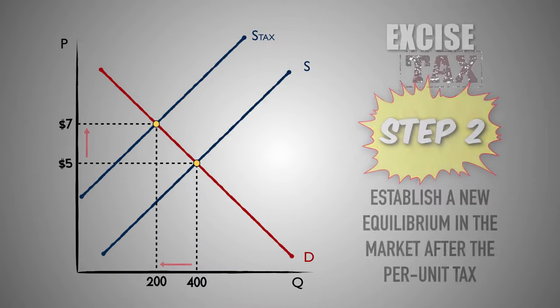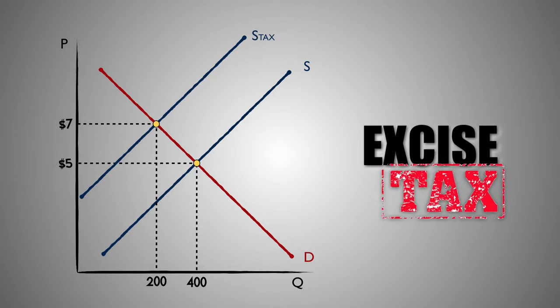Ultimately, did this per unit tax accomplish its goal? It sure did. By requiring firms to pay a tax for every unit of Good C that they produce, the government reduced the equilibrium quantity in the market for Good C to 200 units, effectively decreasing the quantity of Good C produced and reducing the negative externalities associated with its production. The tax also made Good C more expensive, making it less accessible to consumers and reducing the quantity consumed in the market.